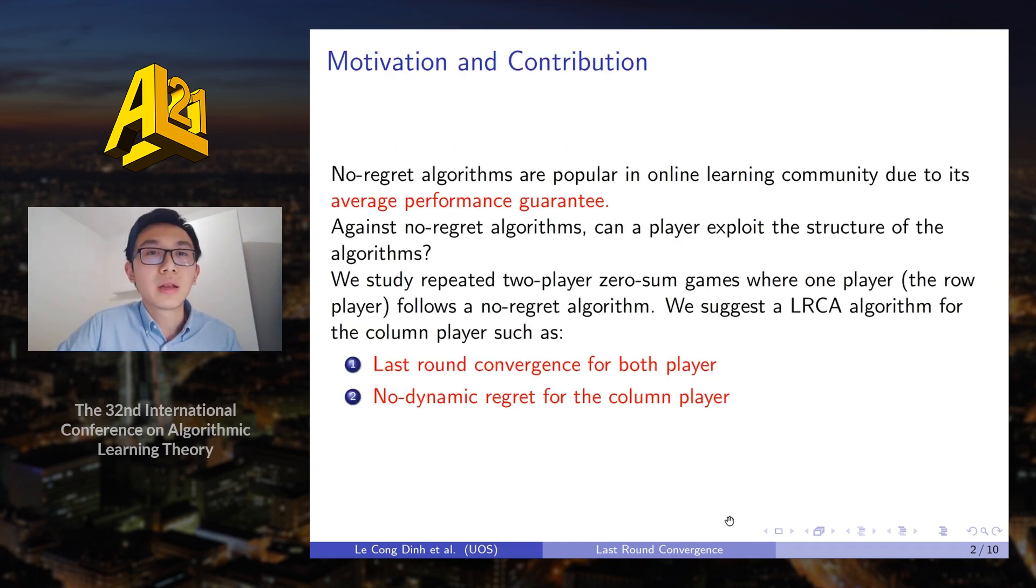No regret algorithms such as Multiplicative Weight Updates or FTRL are very popular in the online learning community due to their average performance guarantees. So it's natural to ask, against these no regret algorithms, can a player exploit the structure of the algorithms?